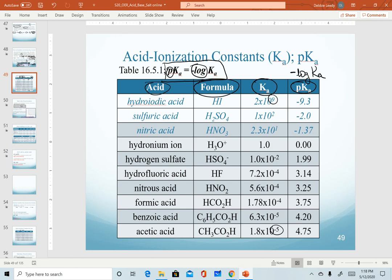And because we have the negative sign in here, realize that there is an inverse relationship between Ka and pKa. As Ka values go up, going up this column, our pKa values go down. So notice hydroiodic, one of our strong acids.